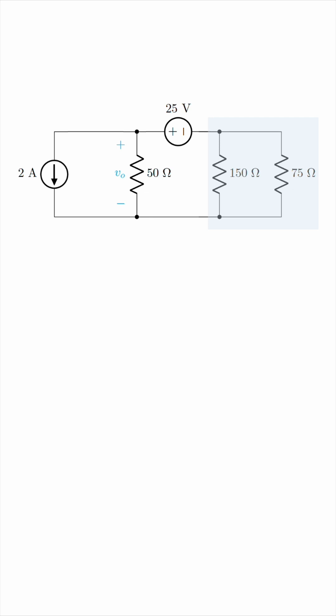150 ohms in parallel with 75 ohms gives 50 ohms, so we have this simplified circuit. Let's call the node where we want to find the voltage node O, because the voltage is vo, and let's call this node on the right-hand side node A. This node where we did the parallel combination.